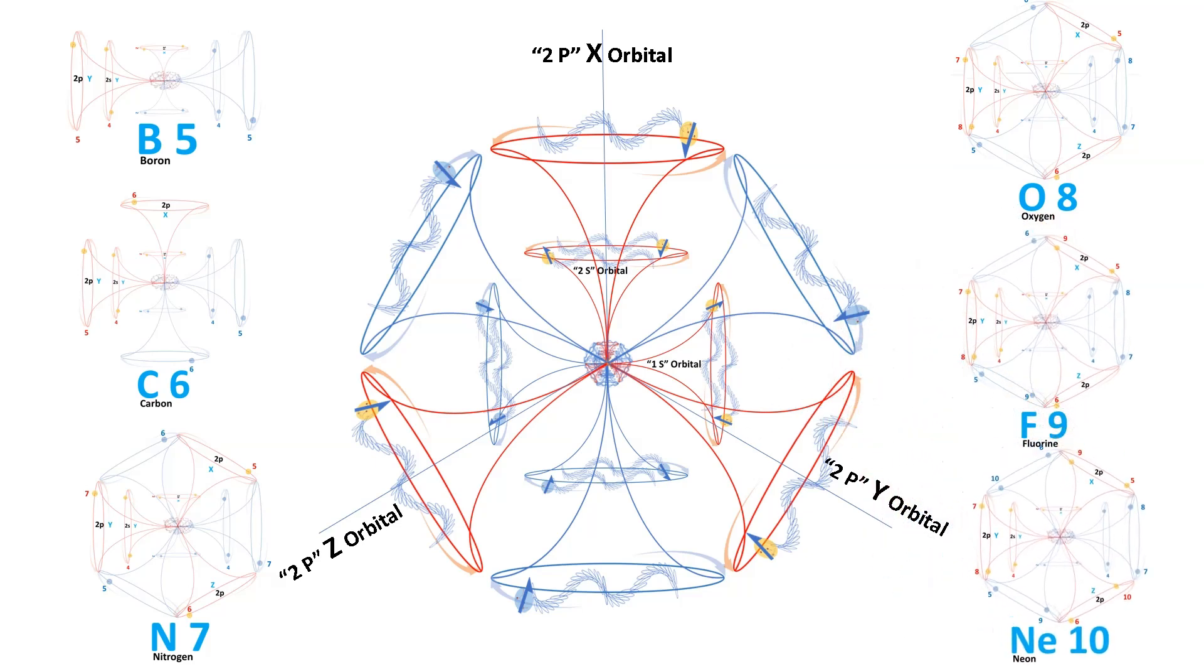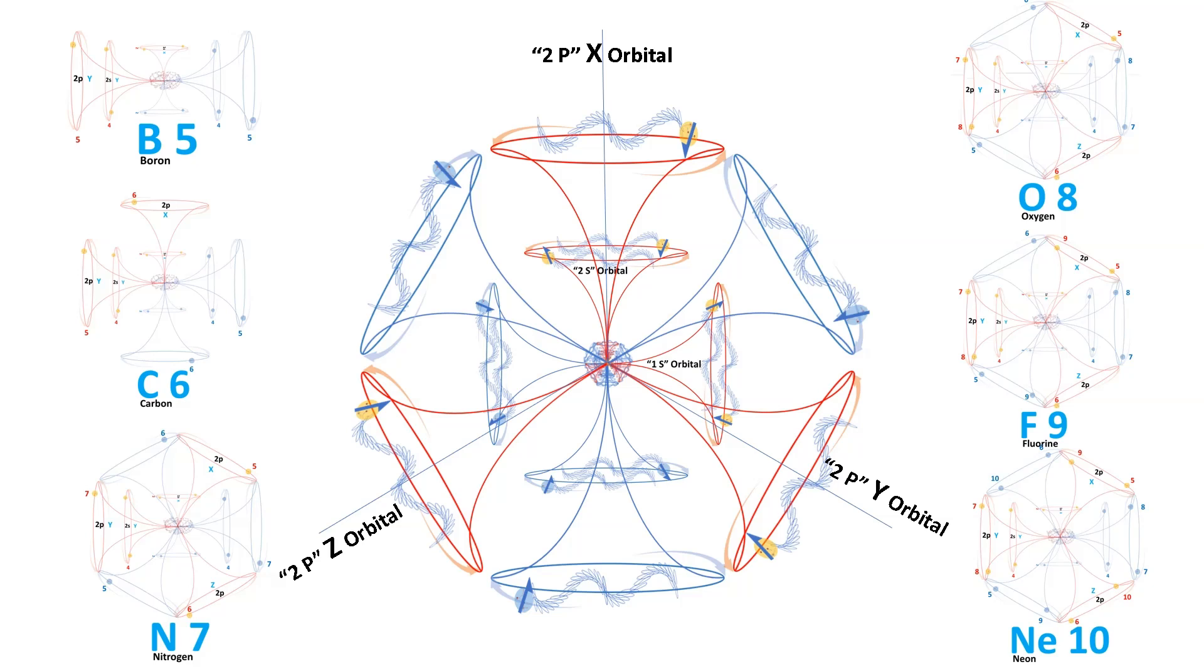One side of this orbital accommodates the electron particle, while the opposite side hosts the positron particle. Every 2p orbital can house a maximum of two particles on each side. When an atom gains energy or acquires an additional electron, the electron migrates to the next available 2p orbital along the y-axis.